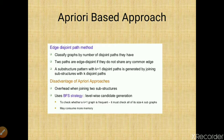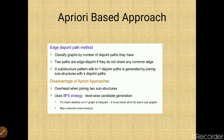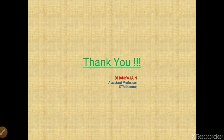These are the frequent pattern mining techniques for subgraphs using the apriori-based approach: AGM, FSG, and the path join method with edge disjoint paths. The disadvantages of the apriori approach include: overhead when joining two substructures; it uses level-wise candidate generation (BFS) rather than depth-wise search; to check whether a k+1 graph is frequent, all of its size-k subgraphs must be checked; and it consumes more memory. That concludes graph mining and frequent subgraph mining techniques.